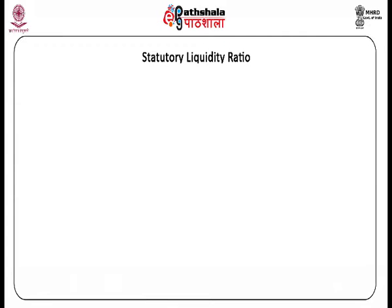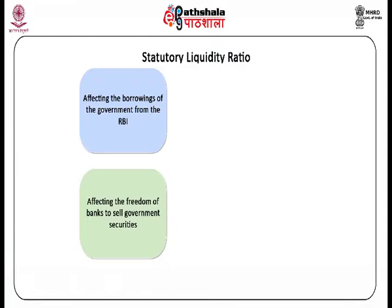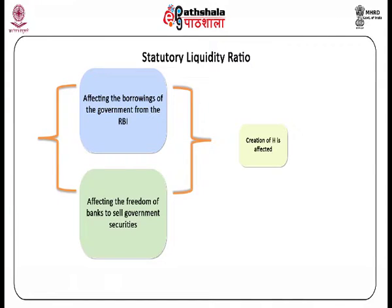The Statutory Liquidity Ratio for banks is yet another tool of monetary control in the hands of the RBI. There are two distinct ways in which the SLR operates as an instrument of monetary control: one, by affecting the borrowings of the government from the RBI; the other, by affecting the freedom of banks to sell government securities or borrow against them from the RBI. In both ways, the creation of H is affected and thereby variations in the supply of money.